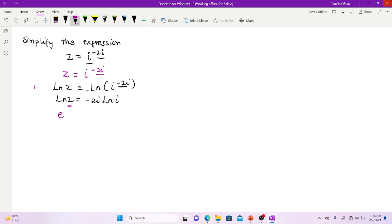So you are going to take e on both sides. So you have e to the power ln z should be equal to e to the power negative 2i ln i.